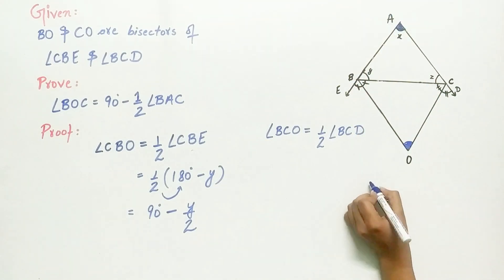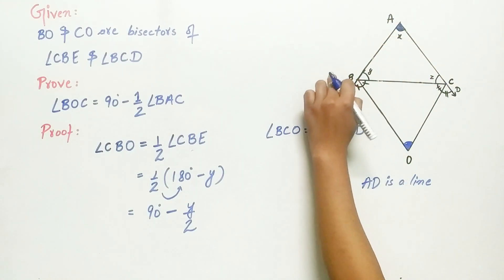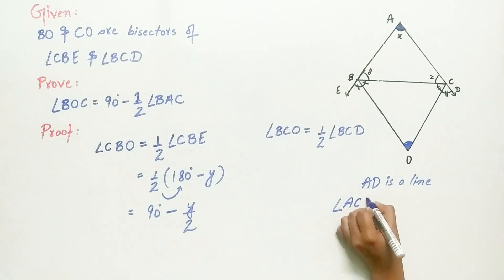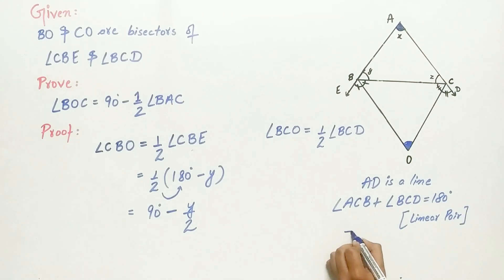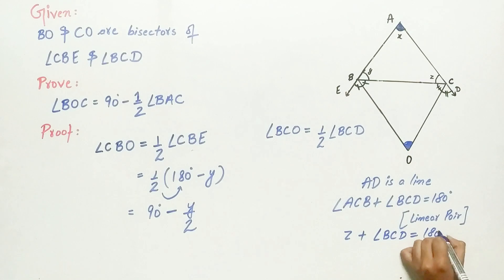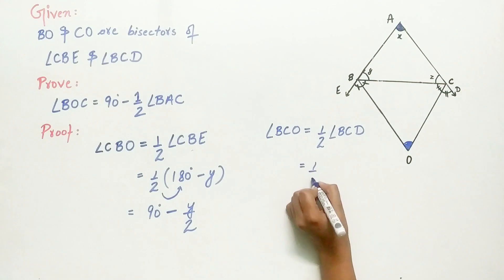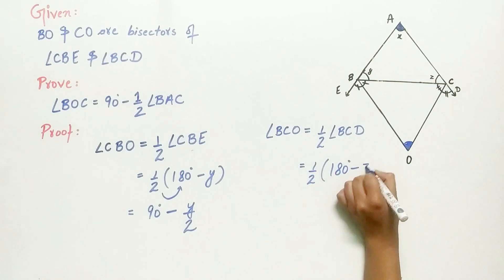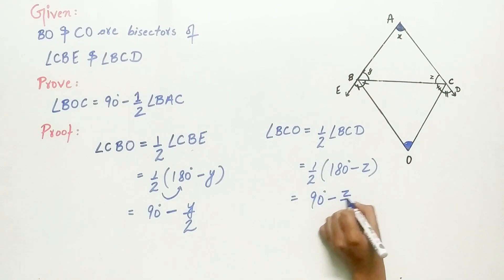Again, AD is a straight line. Hence, angle ACB plus angle BCD equals 180 degrees because of the linear pair. Let angle ACB equal Z. Therefore, angle BCD equals 180 degrees minus Z. Substituting: angle BCO equals half of (180° − Z), which gives 90 degrees minus Z by 2.